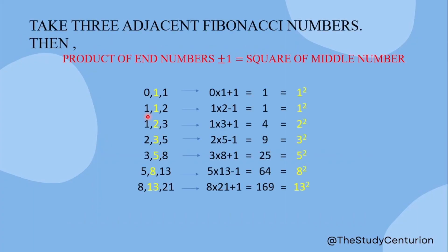Take 3 adjacent Fibonacci numbers. The pattern says that the product of the outer numbers, plus or minus 1, will be equal to the square of the middle number.